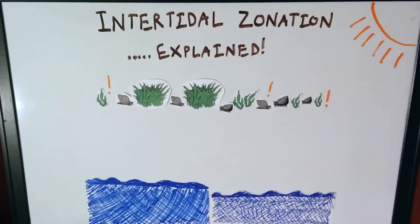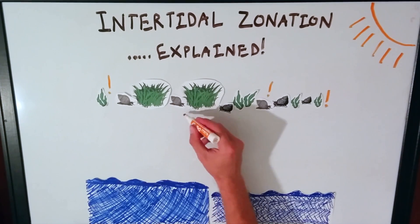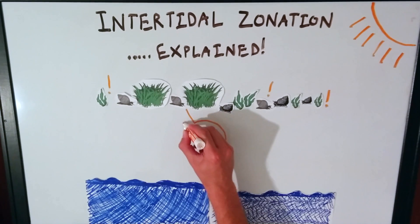It's because these organisms are adapted to surviving in certain areas within the tide. Intertidal zonation is when you get horizontal bands of different species created by tides and environmental stresses.